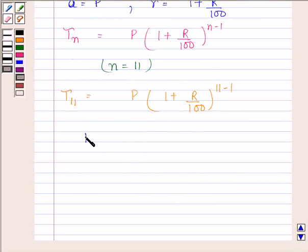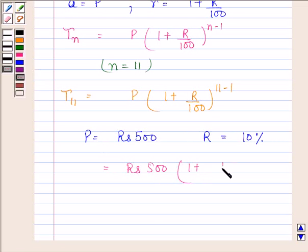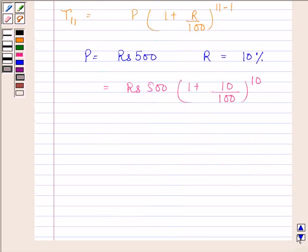We are given that principal (that is P) is equal to rupees 500, and rate of interest is equal to 10%. So this is equal to 500 into 1 plus 10 by 100 to the power 10. This is equal to 500 into 1.1 to the power 10. Hence, our required answer is rupees 500 into 1.1 to the power 10.